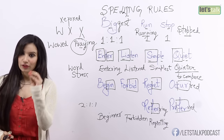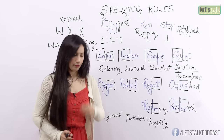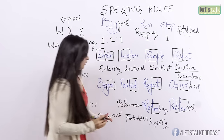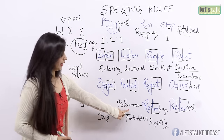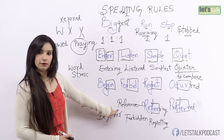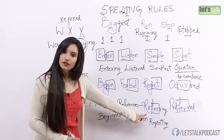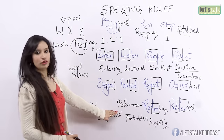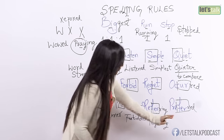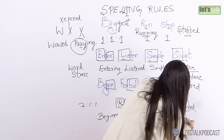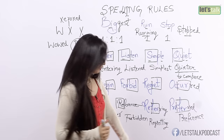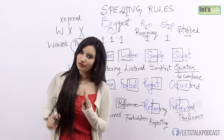Now some exceptions for the last rule. Let's look at this word: 'reference.' Why don't we double the R here, but we do double the R in 'referring'? Because in 'referring,' the stress is on the second syllable. However, when you say 'reference,' you don't say 'reference' — you say 'reference,' with stress on the first syllable. So whenever the stress is on the first syllable, you don't have to double the last consonant. Let's look at this one: 'preference.' Is it 'preference'? Do we stress the second syllable? No — we stress on the first syllable, 'preference,' and that's why we do not double the last consonant.